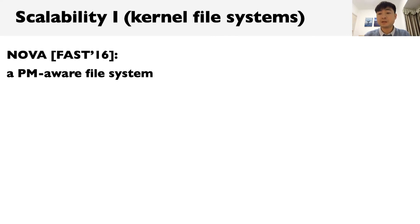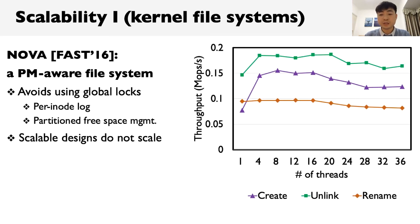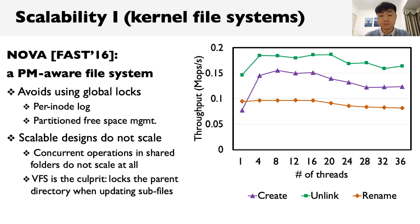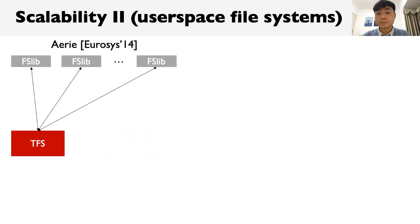We first measure the scalability of a state-of-the-art persistent memory file system named NOVA. It incorporates many scalable design principles, such as giving each inode a separate log and avoiding global logs by partitioning free spaces. However, our experiments show that NOVA still fails to scale on operations concurrently performed in shared directories — create, delete, or rename operations are almost unchanged as we increase thread count, mainly because VFS needs to lock the parent directory when updating subfiles. Several user-space file systems such as ARIA are proposed to reduce this overhead, but ARIA requires a trusted process to handle all metadata updates and coordinates concurrent access using a distributed log service, making all related requests go to this centralized component.